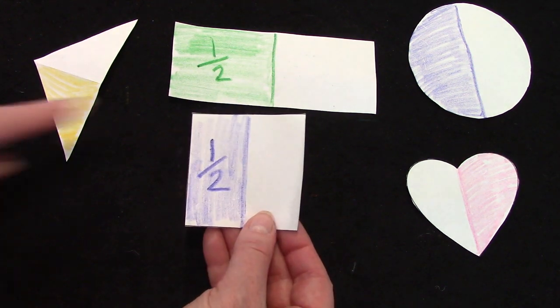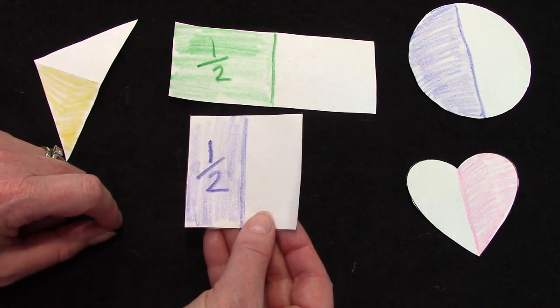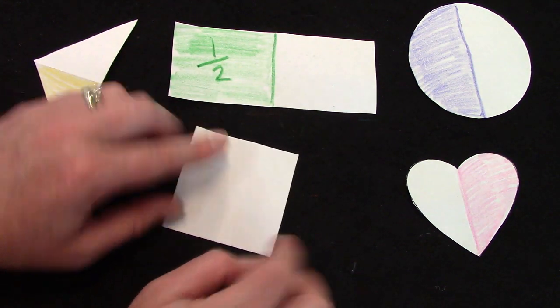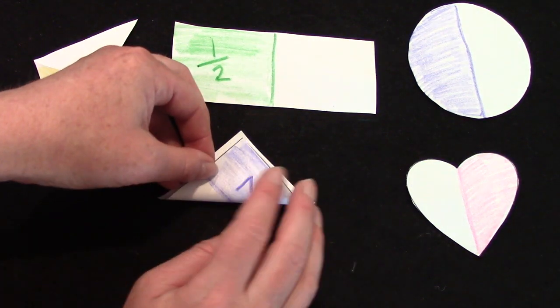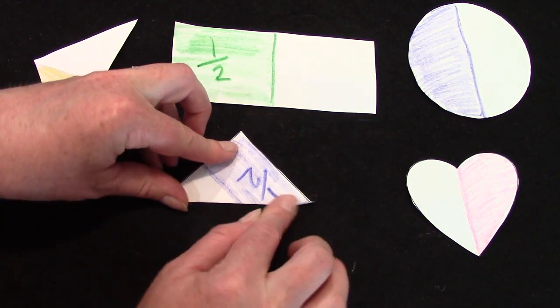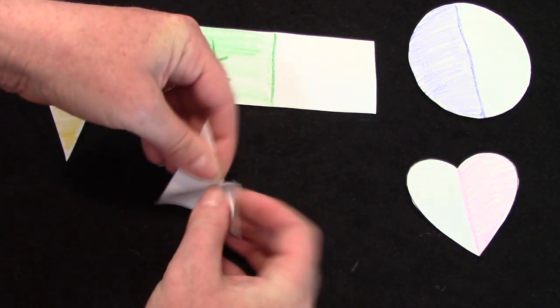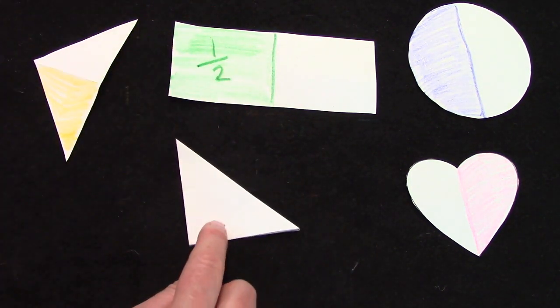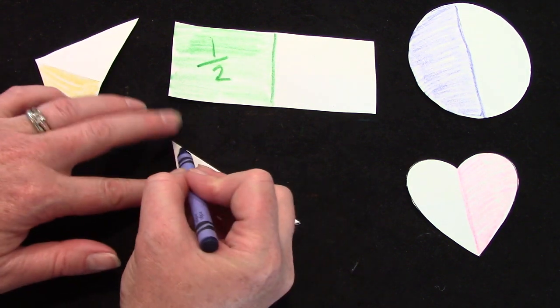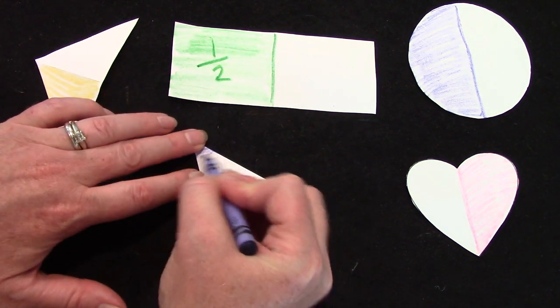No. Let's see. Could do it this way. Or I could do it from corner to corner. Fold it like that, so that it looks like a triangle. And I could have colored it this way too.